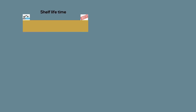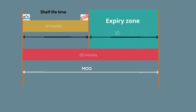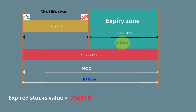The shelf lifetime from production date until the expiry date for product B is 10 months, but the MOQ covers 20 months. This means 10 months worth of stock will expire, which is equivalent to 5 tons of demand. The expired stock value equals 5 tons multiplied by the COGS value of $500 US dollar per ton, totaling $2,500 US dollars.